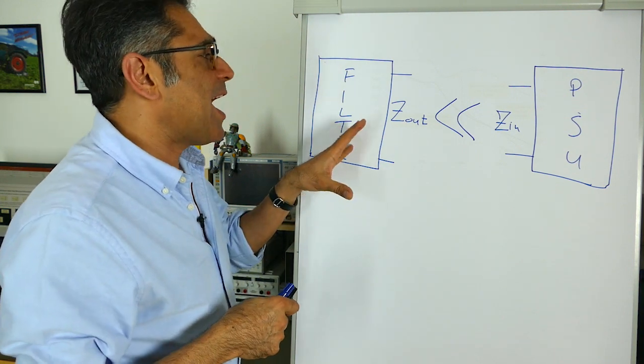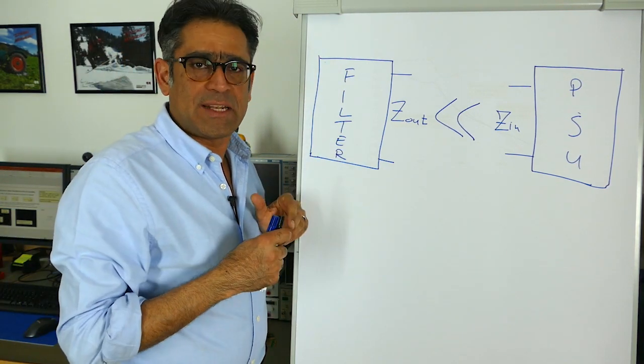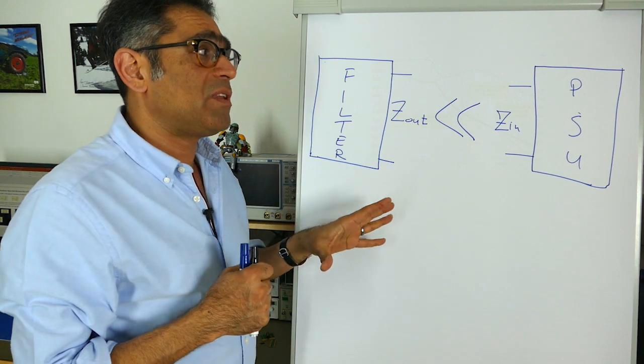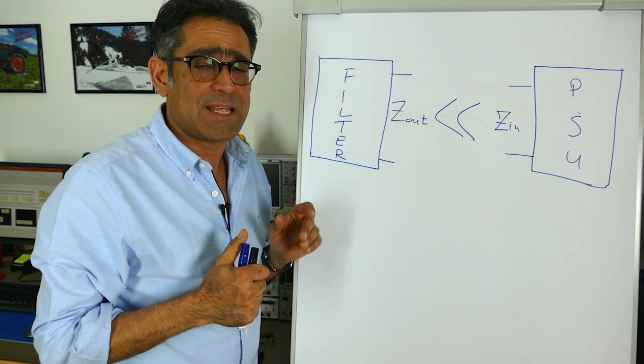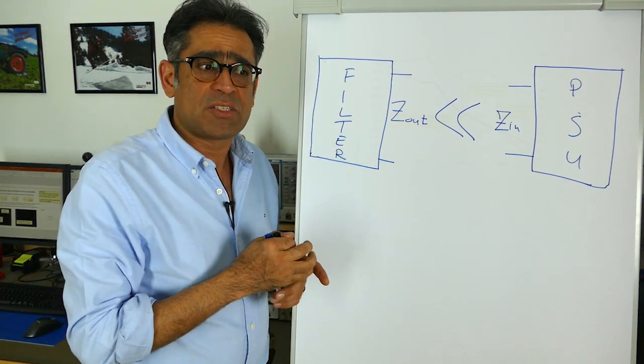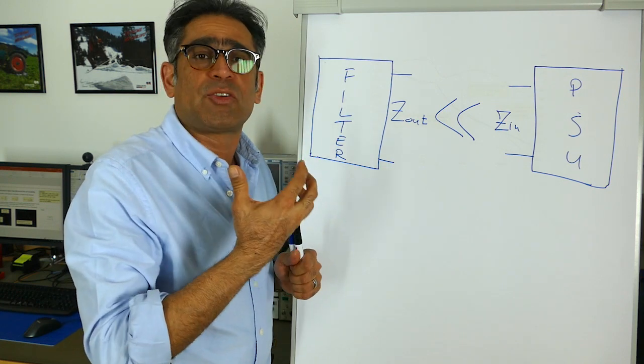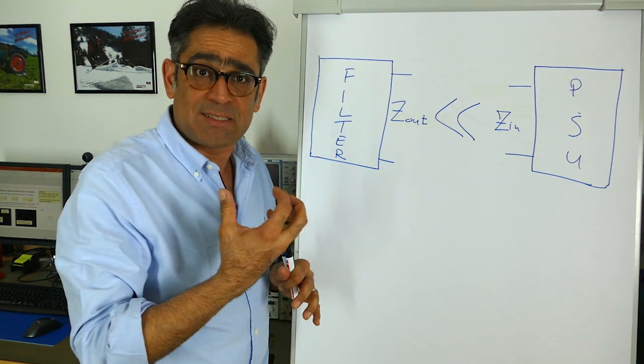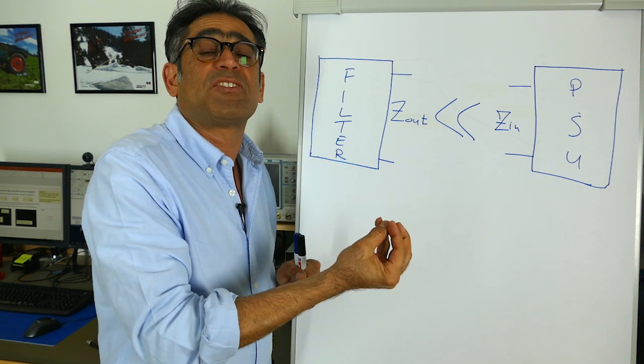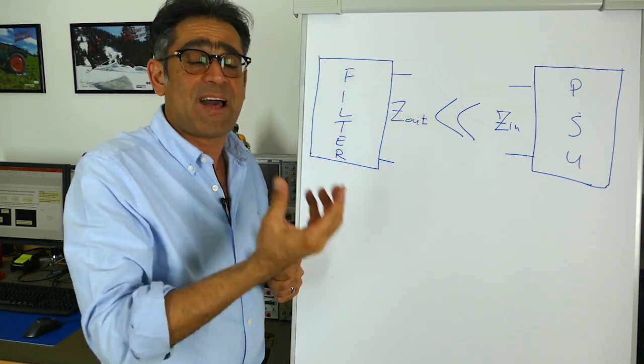Now measuring the output impedance of the filter is not that difficult, measuring the input impedance of the power supply is not as straightforward. That is because in order for the power supply to operate you're going to have to put some capacitors on the input and of course that is part of the filter and not part of the power supply.